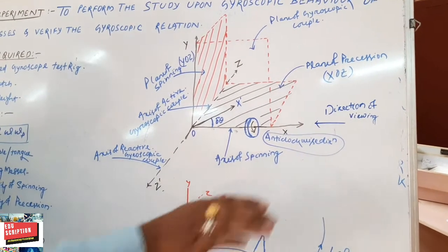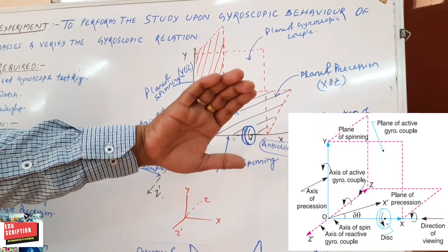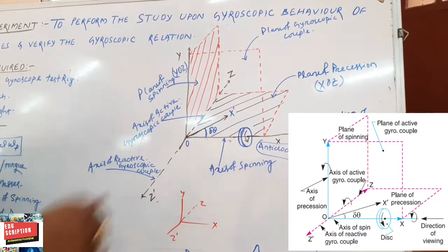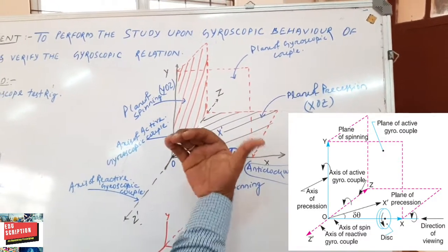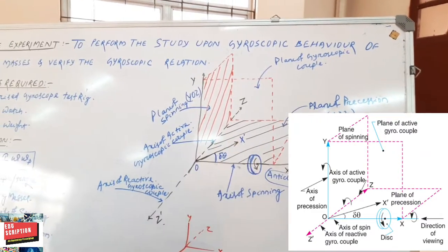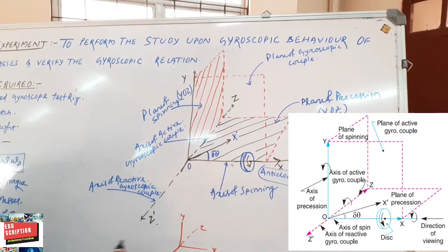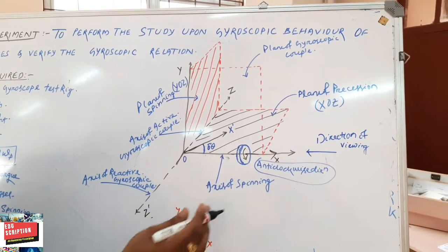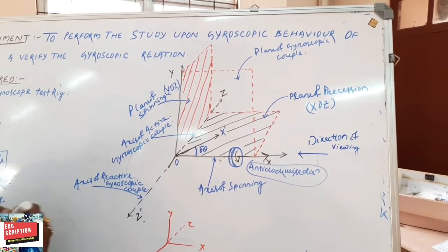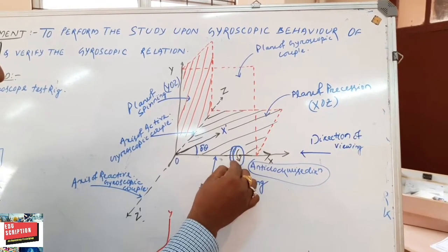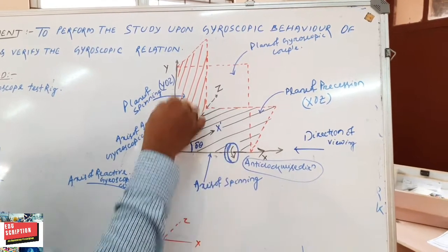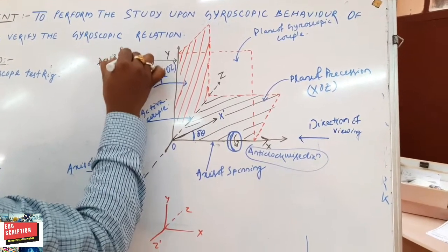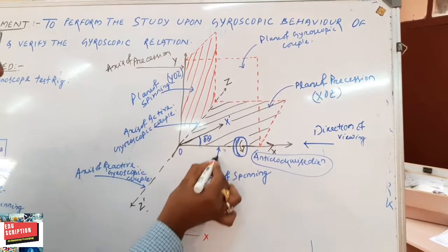Applying the right-hand screw rule in the direction of rotation, the thumb will show the direction of the spinning axis. If we are seeing from this direction and it is rotating in anticlockwise direction, the spinning axis direction will be in this way. At the time of spinning, if the rotating masses also have a small change in another direction, that will be termed as precession. The rotating masses, while rotating about its own axis, also rotate about the y-axis. So the y-axis is termed as the axis of precession, and the x-axis is the axis of spinning.